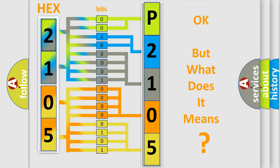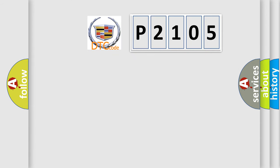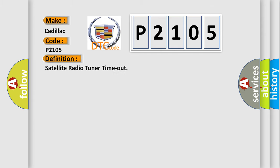The number itself does not make sense to us if we cannot assign information about what it actually expresses. So, what does the diagnostic trouble code P2105 interpret specifically for Cadillac car manufacturers? The basic definition is: Satellite Radio Tuner Timeout.